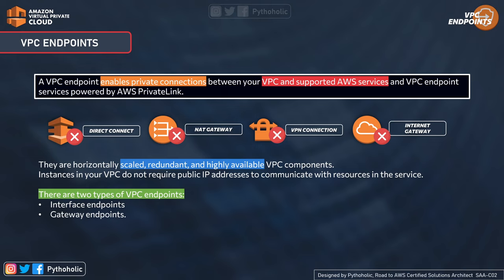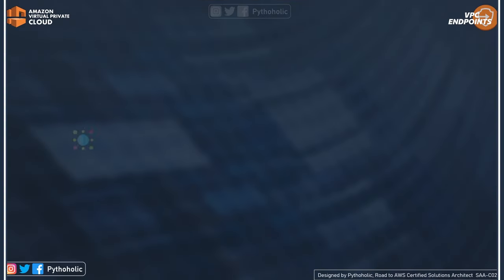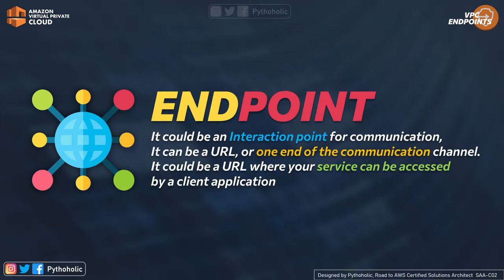Instances in your VPC do not require public IP addresses to communicate with resources and services because it remains a private connection. There are two types of VPC endpoints: the first is interface endpoints and the second is gateway endpoints. We will talk about them in detail.